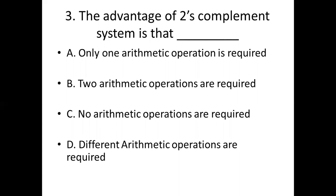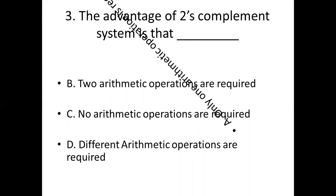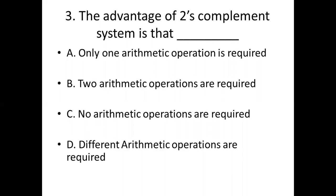Third bit. The advantage of the two's complement system is that dash. Option A: only one arithmetic operation is required. Option B: two arithmetic operations are required. Option C: no arithmetic operations are required. Option D: different arithmetic operations are required. Answer: Option A, only one arithmetic operation is required.